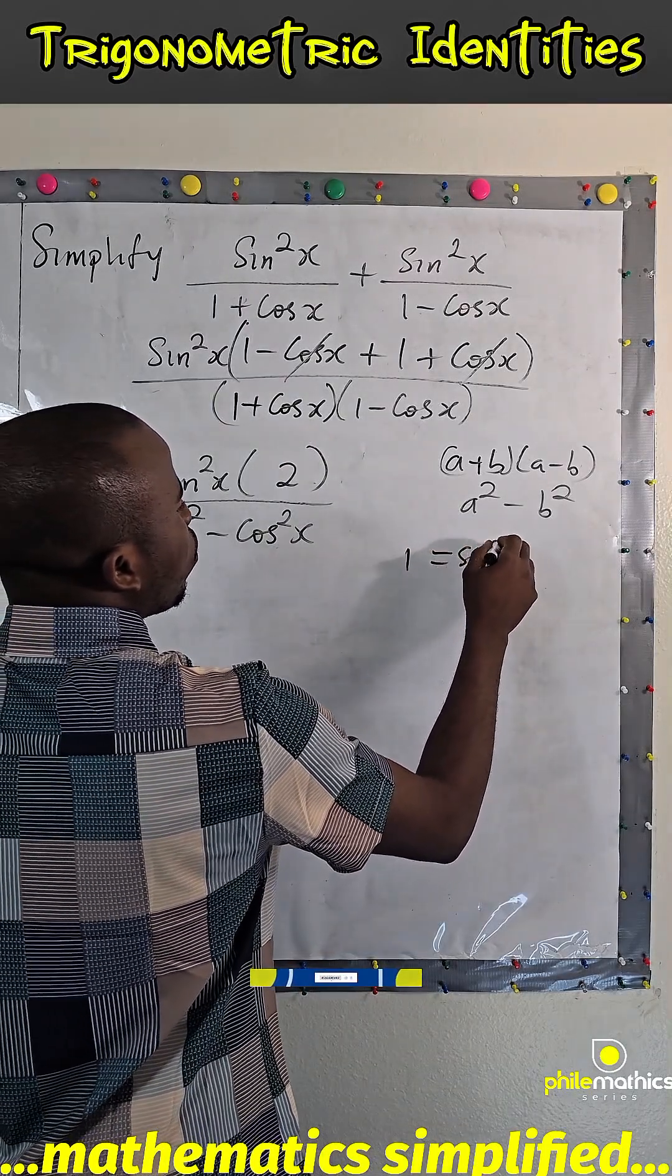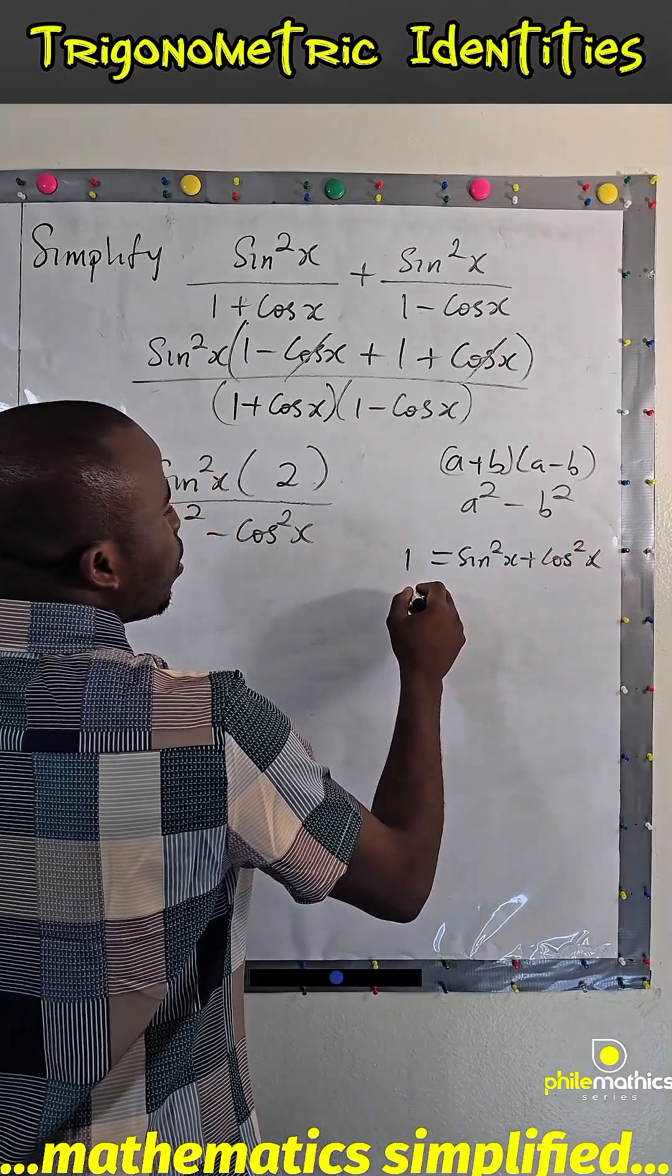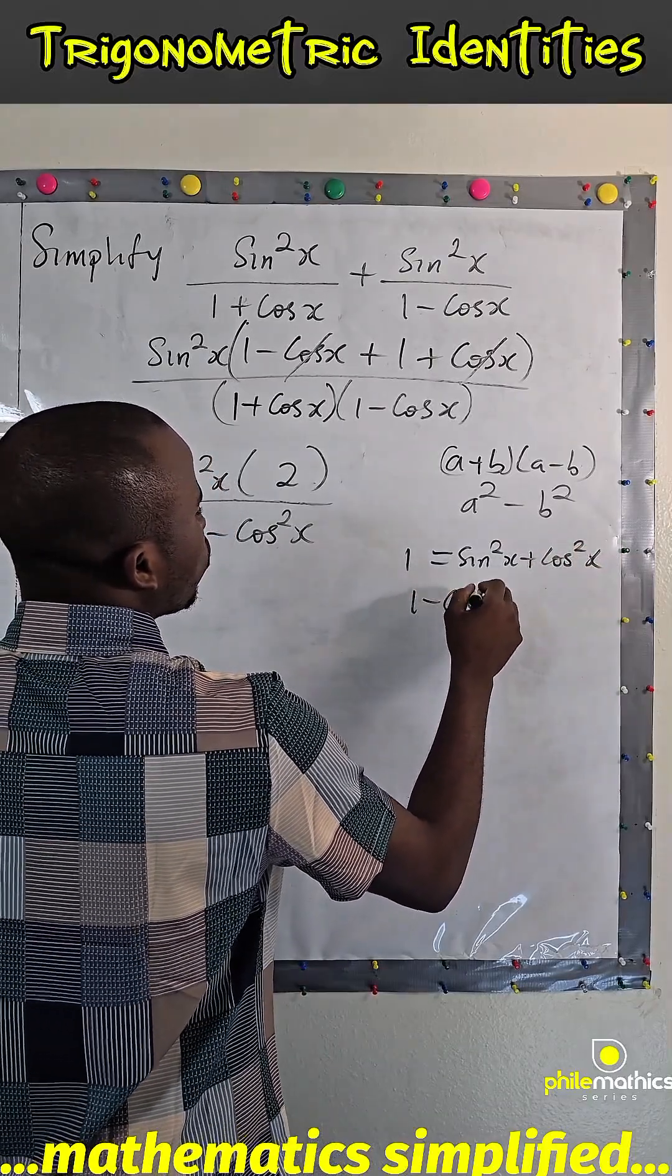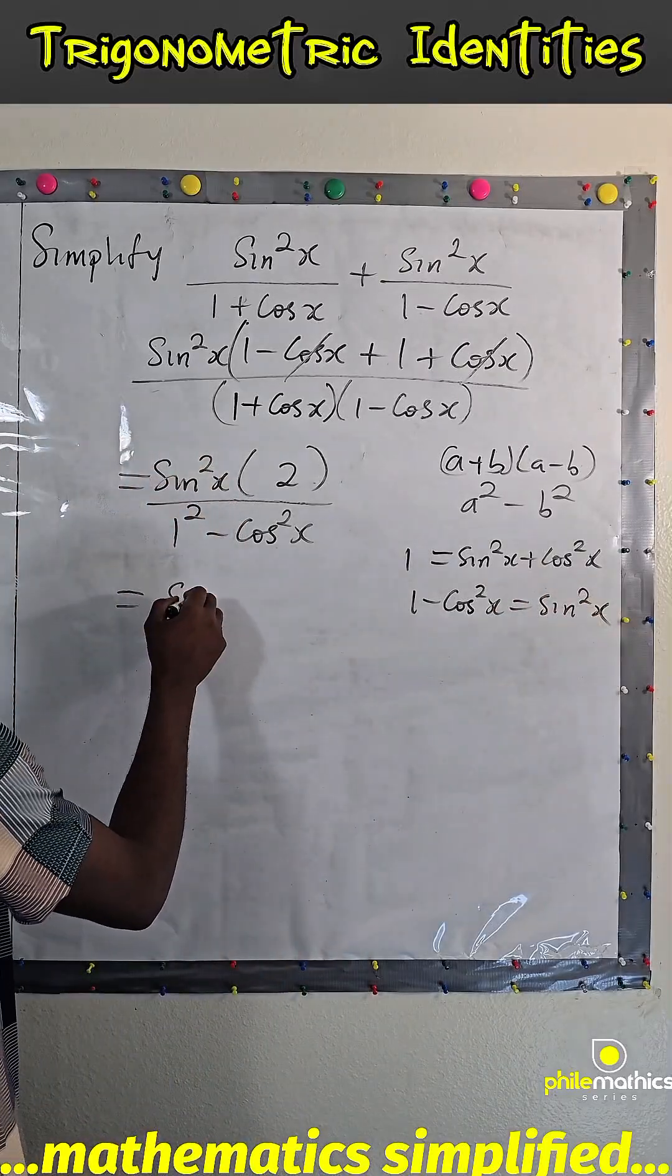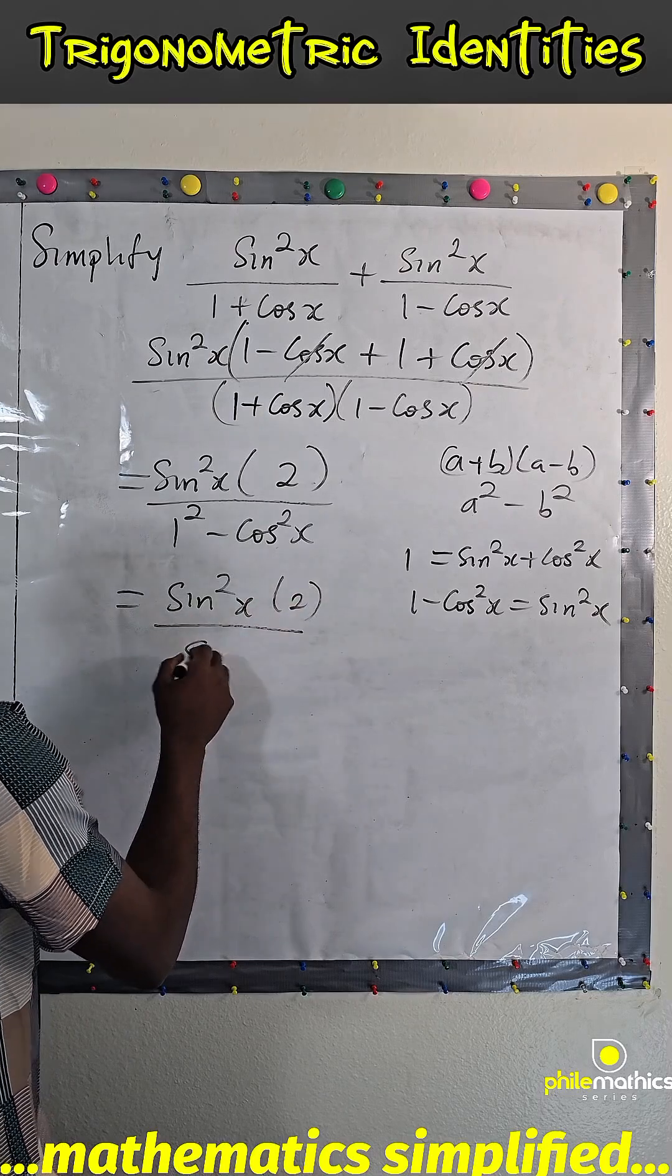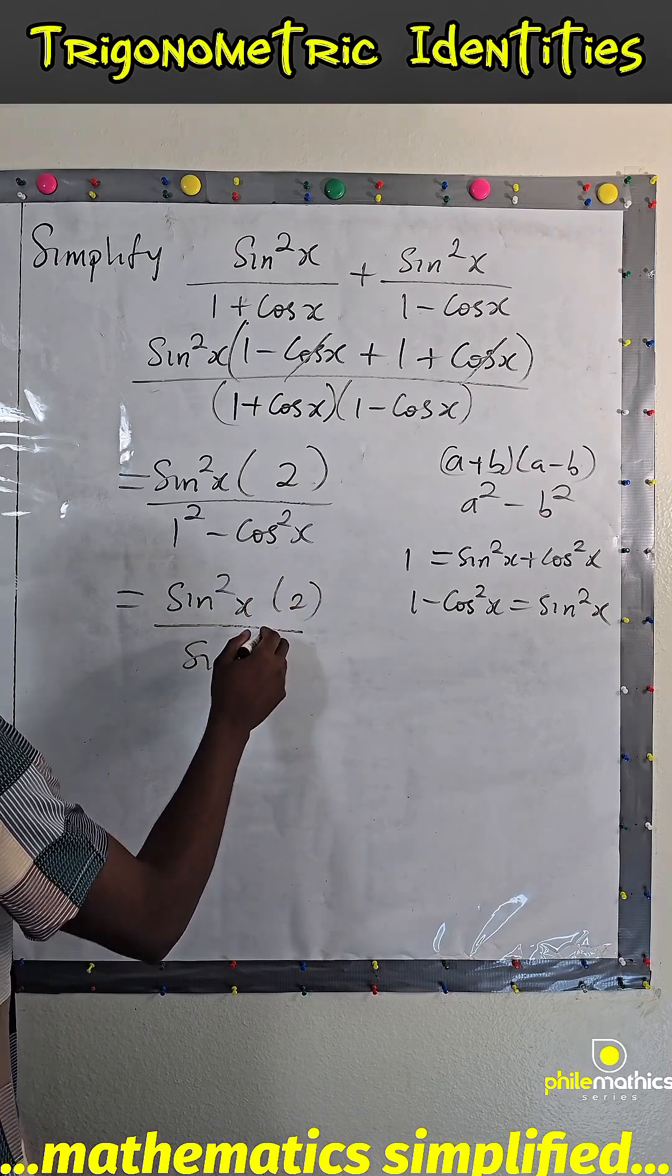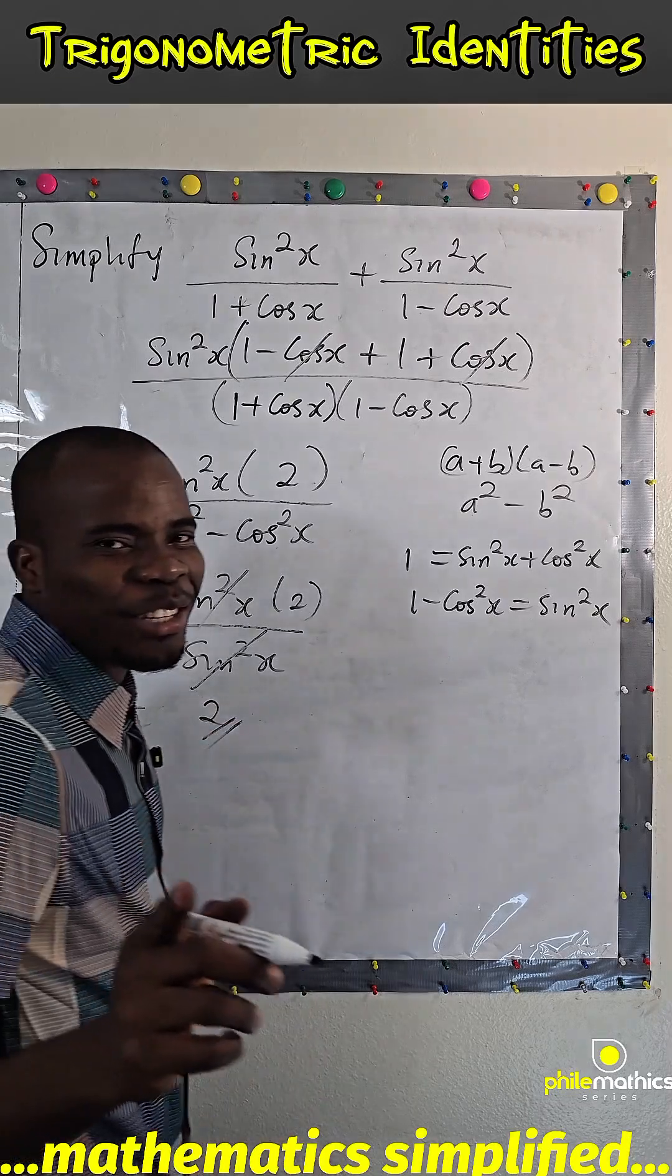That 1 minus cos square x is simply sine square x. So this will leave us with sine square x, and it's 2 over sine square x. So at the end of the day, we just have 2. Thank you for watching.